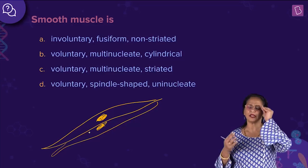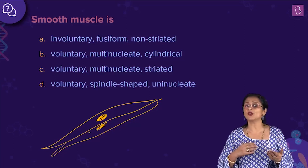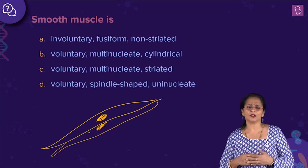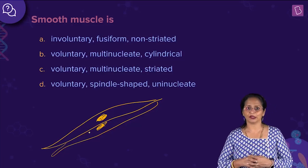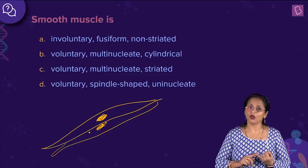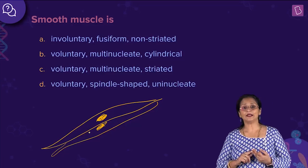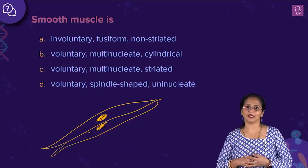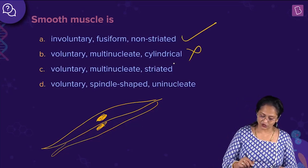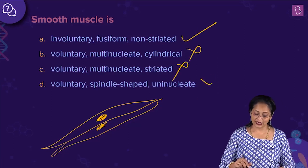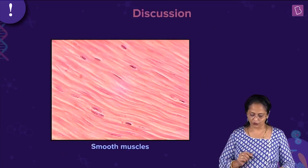The stripes in striated muscles come from alternate light and dark bands caused by the proteins actin and myosin. So the properties of smooth muscle are: involuntary, fusiform shape, uninucleate, and non-striated. The answer is A. Options B, C, and D can be immediately eliminated because smooth muscle is involuntary, not voluntary.